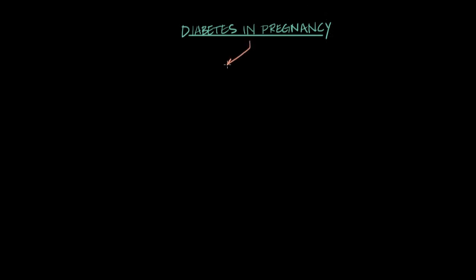Diabetes in pregnancy splits up into two different categories. There's the category of women who had diabetes before becoming pregnant, and that's called pre-gestational diabetes — pre for before, gestational for pregnancy, so diabetes before pregnancy.